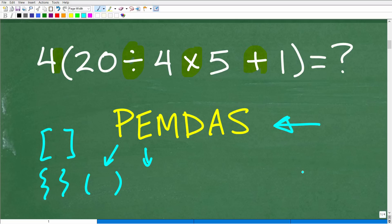E stands for exponents. So when you have a power like 2 squared, this little 2 up here is called an exponent. But you can think of the E as powers. So we're going to be looking for things like this.